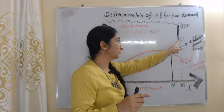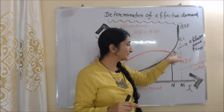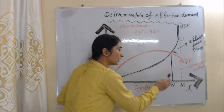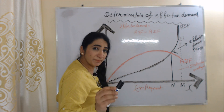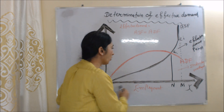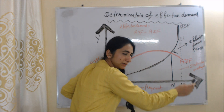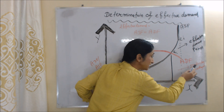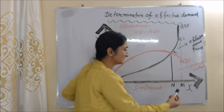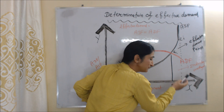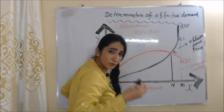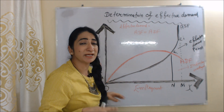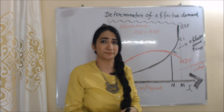However, this E point is not the full employment point. Our full employment point is E1. At point E, only ON workers are employed, but for full employment we require ON1 workers. So NN1 represents involuntary unemployment — NN1 people want to work at existing wages but are not able to find work.